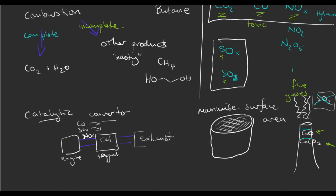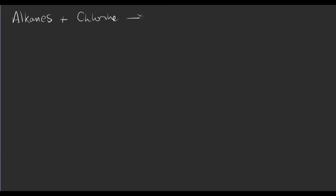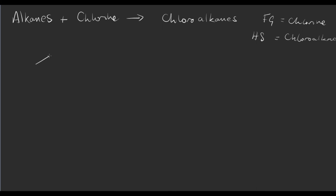There's one more thing we're going to look at: the chlorination of alkanes using chlorine and a free radical mechanism. The chlorination of alkanes is used to create a whole range of different compounds called chloroalkanes. So if I take alkanes and add chlorine, I get chloroalkanes. The functional group here is the chlorine, and the homologous series we're looking at are chloroalkanes. Let's start by looking at methane — CH4.